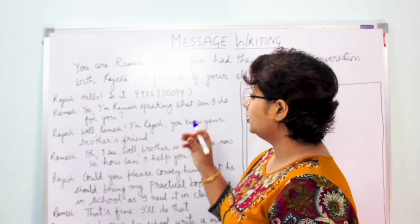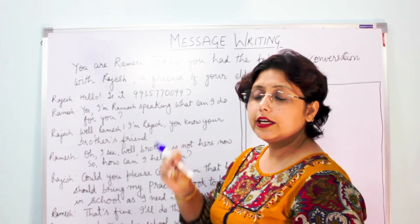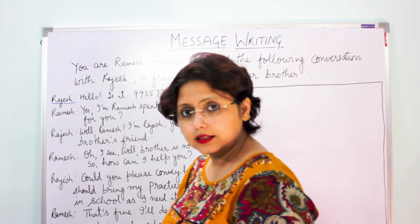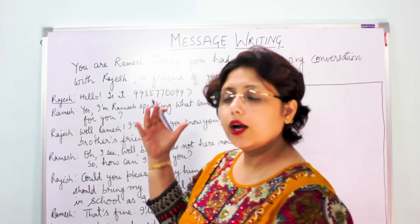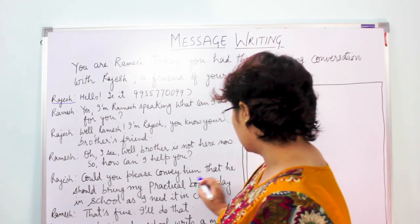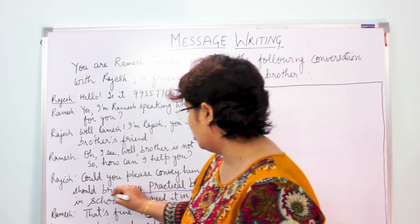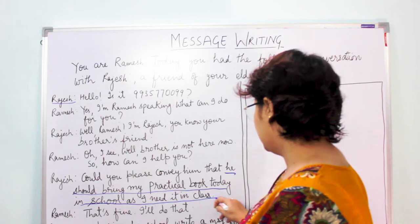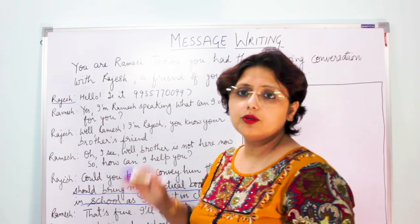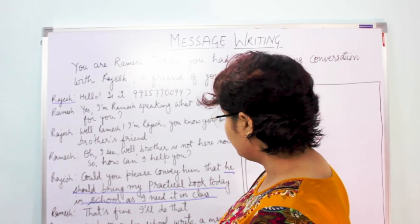So now what we will do is underline the important things we really need. First: who called — Rajesh called. We will have to mention that Rajesh had called in the elder brother's absence. Second: what was the message — that the brother should bring Rajesh's practical book to school because he needs it in class. That is the message to convey.